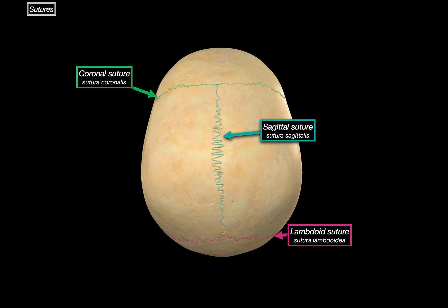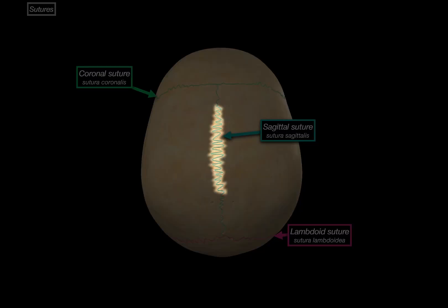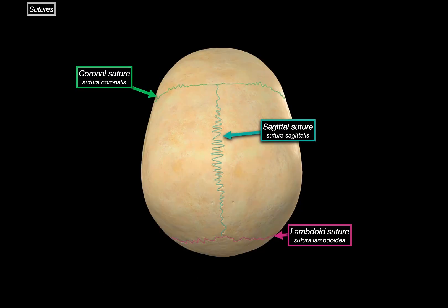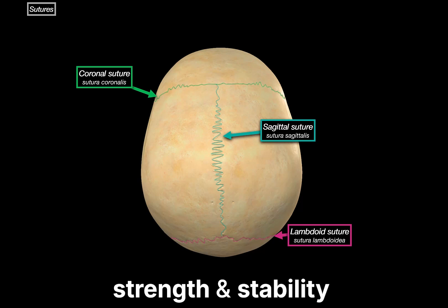Notice how all of these sutures have that interlocking sawtooth appearance — that's what gives them strength and stability. Those are the sutures: immovable joints in the adult skull, what we call synarthrosis. But don't forget, these sutures were once flexible gaps filled with fibrous connective tissue when we were born.